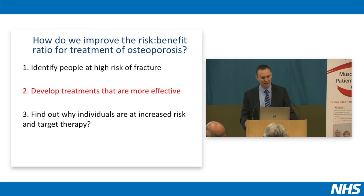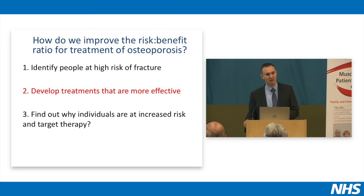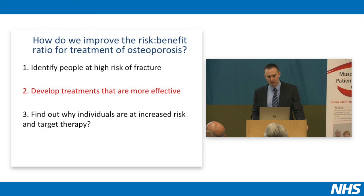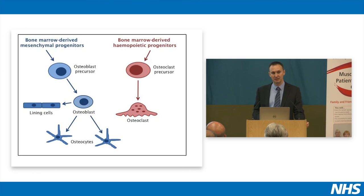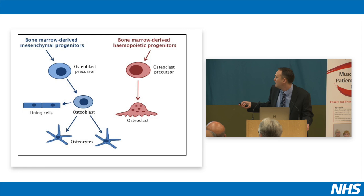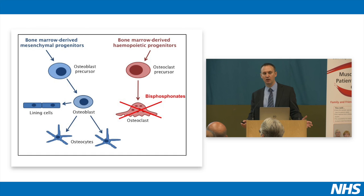Now looking at whether we can develop more effective treatments. I'll tell you first a bit about how bones work in terms of cell physiology, then explain current treatments and how they work, then tell you about new drugs being researched. The most important cells within bone — because it is a living tissue — are the osteoblast, which makes bone; the osteoclast, which breaks down bone; and the osteocytes, which are signalling cells that tell the osteoblast and osteoclast what to do.